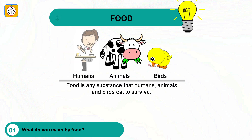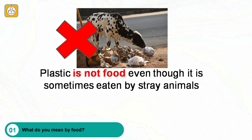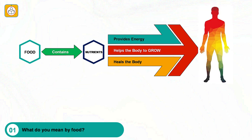What do you mean by food? Food is any substance that humans, animals and birds eat to survive. Some animals and birds eat flesh, some eat plants and green leaves, some eat grains, fruits and vegetables, and a remaining few eat everything like humans do. Food includes those substances that provide necessary nutrients to the body. Nutrients are special materials which provide energy to the body and also help the body to grow and heal.